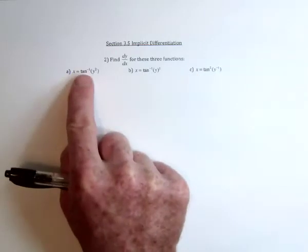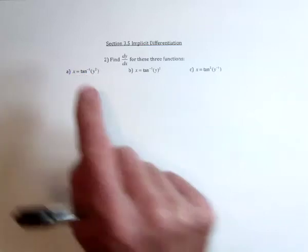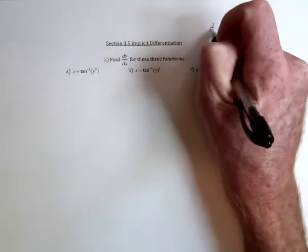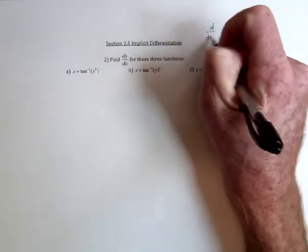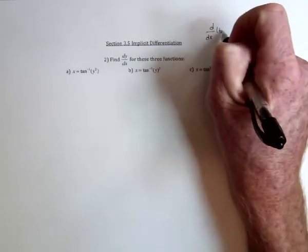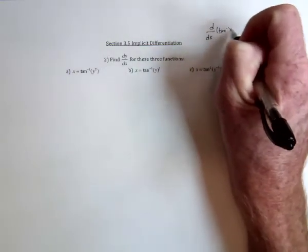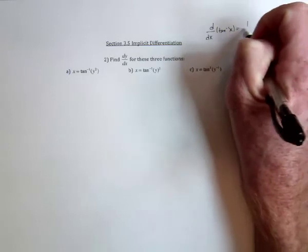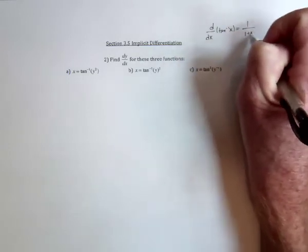So for example, this one is saying the outer function is tangent inverse, so take the derivative of tangent inverse. So you've got the derivative with respect to x of tangent inverse, if it was just an x would be 1 over 1 plus x squared.